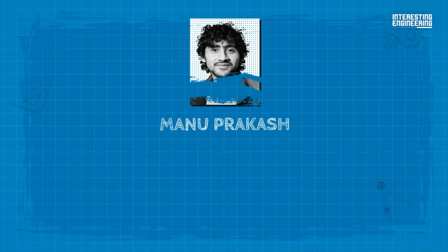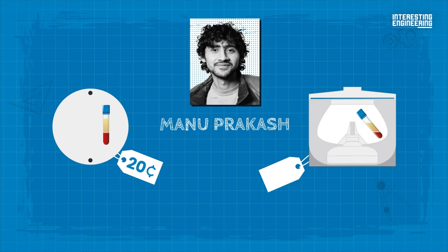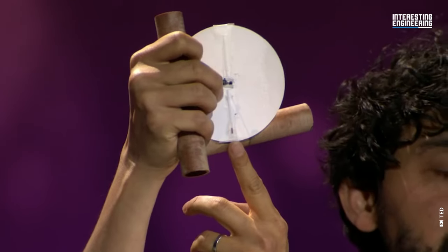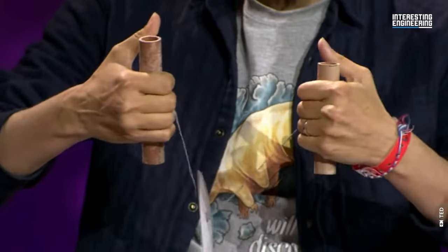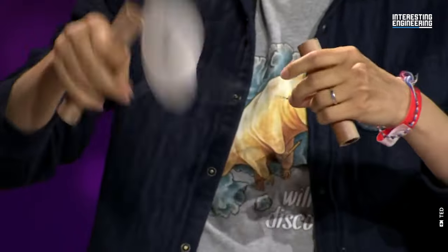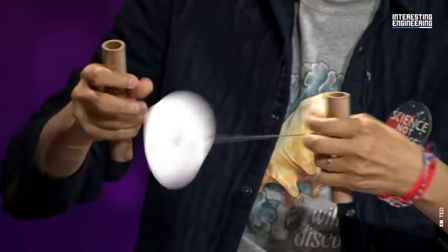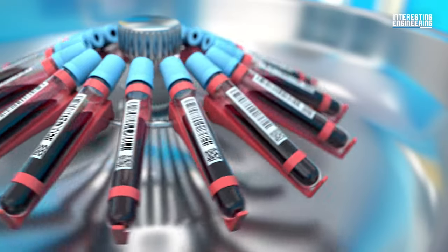Prakash said that the technical specifications of their 20-cent paper centrifuge can match centrifuges that cost up to $5,000. If you focus on this, you should be able to see a separated volume. This paperfuge is able to isolate malaria parasites in 15 minutes and separate blood plasma from red cells in about a minute and a half. And best of all is the fact that it doesn't use electricity.